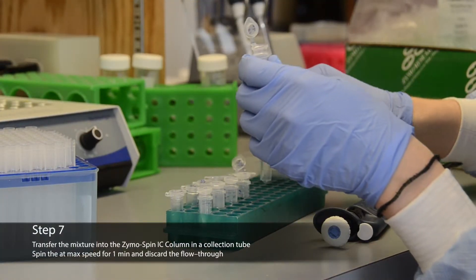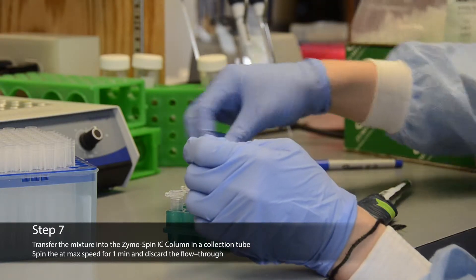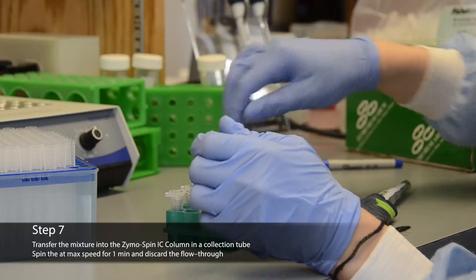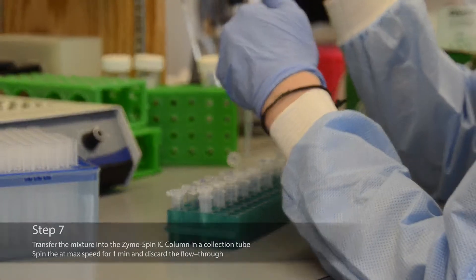Transfer the mixture to the Zymo Spin IC column in a collection tube and centrifuge at max speed for one minute. Discard any flow through.